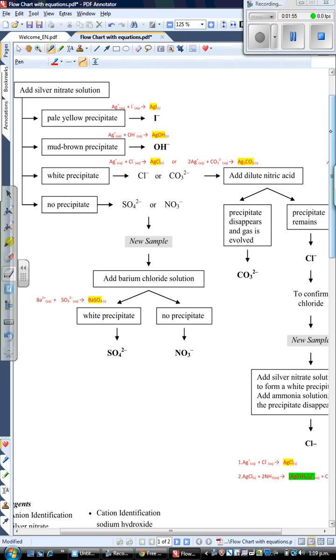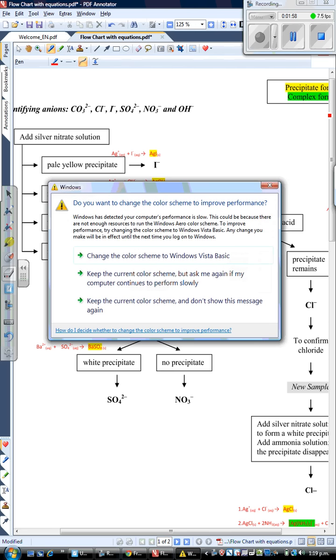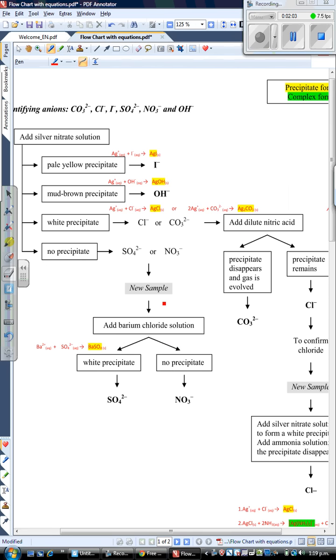Going back to the top, I'll briefly run through each of these additions. A pale yellow precipitate is evidence of silver iodide. You have silver ions from the silver nitrate solution and iodide as the unknown, forming a pale yellow precipitate of silver iodide. State symbols are used: aqueous for everything in solution and S for solid precipitate.